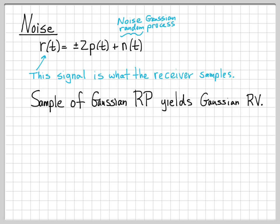We'll clarify the definition of a random process and a Gaussian random process later. For now, all you need to know is that if you sample a Gaussian random process, what you get is a Gaussian random variable — and a Gaussian random variable is something we've already studied.